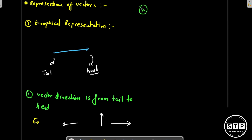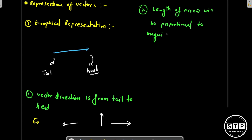Next, the arrow also gives information about the magnitude. We cannot calculate the exact magnitude from the arrow, but the length of the arrow will be proportional to the magnitude of the vector. So the greater the magnitude, the longer the arrow will be.